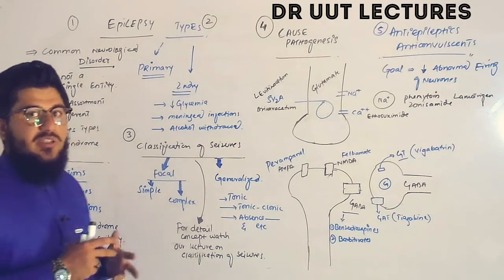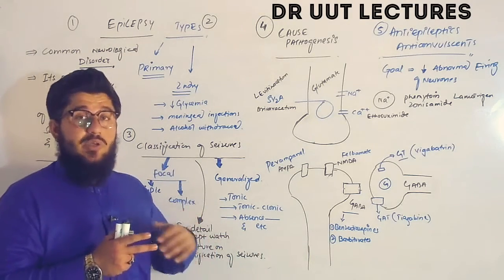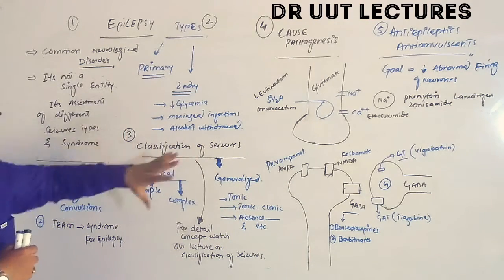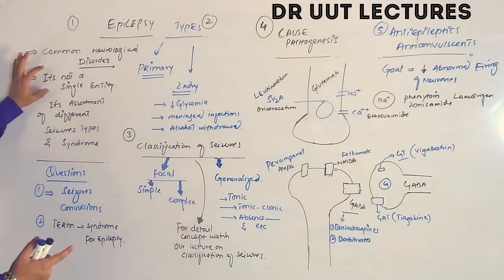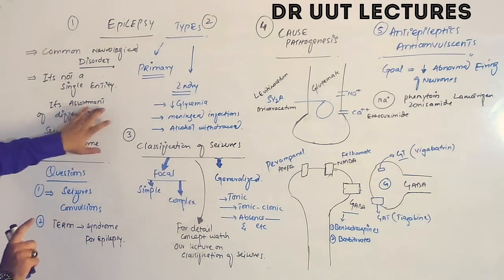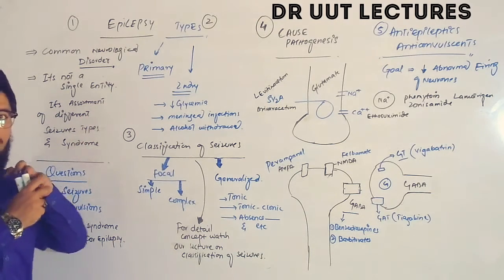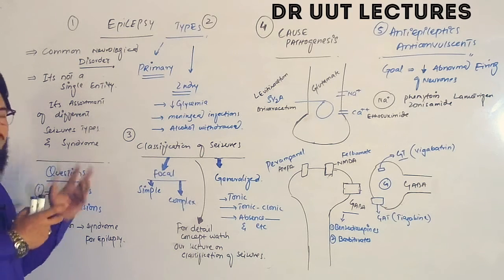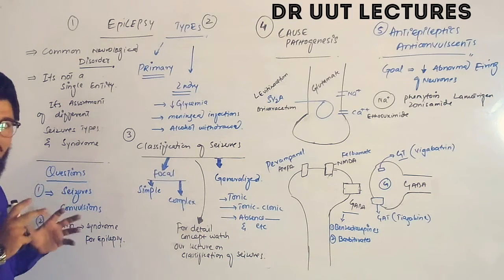Some books state there is a kind of hyperactivity between two neurons; other books state there is abnormal electrical discharge between neurons in the brain — that is called epilepsy. Furthermore, epilepsy is not a single entity; it is actually an assortment or combination of different types of seizures plus syndromes, meaning several types of symptoms are seen in epilepsy.